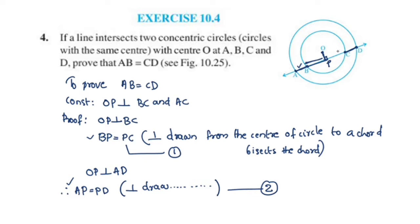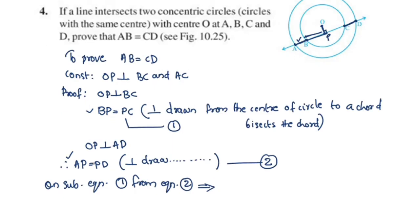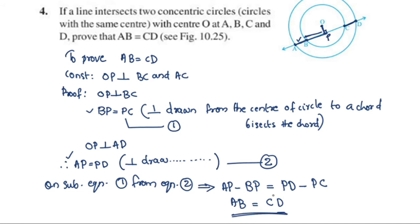If we subtract BC, we can subtract CD. We subtract equation 1 from equation 2: AP minus BP equals PD minus PC. AP minus BP equals AB, and PD minus PC equals CD. Therefore AB is equal to CD.